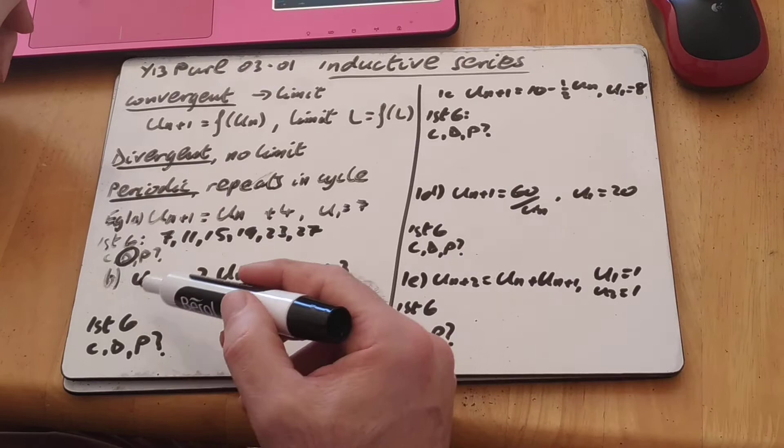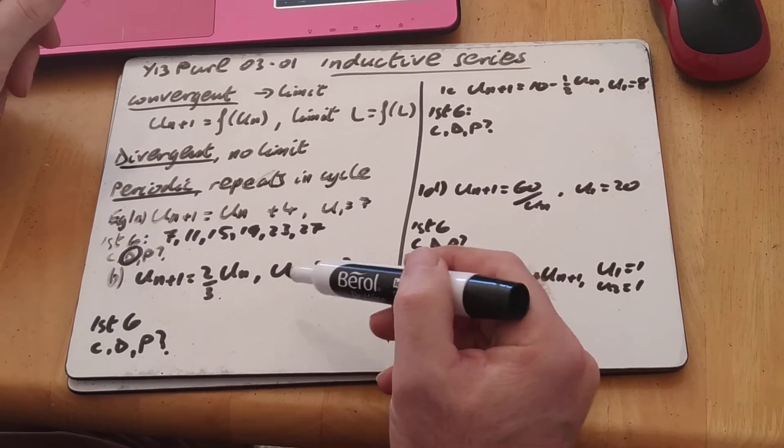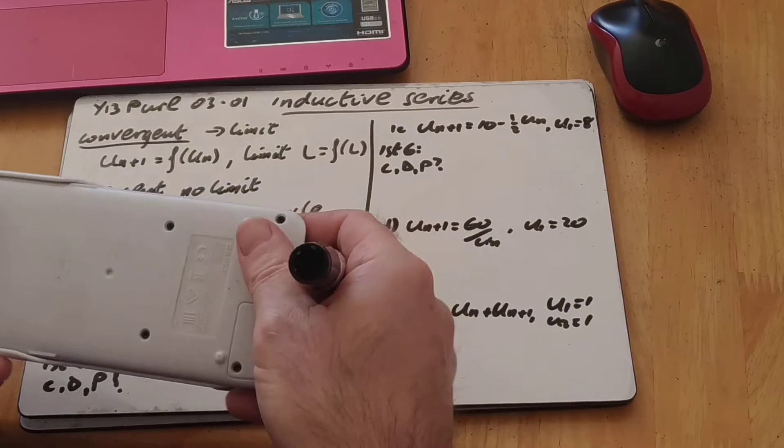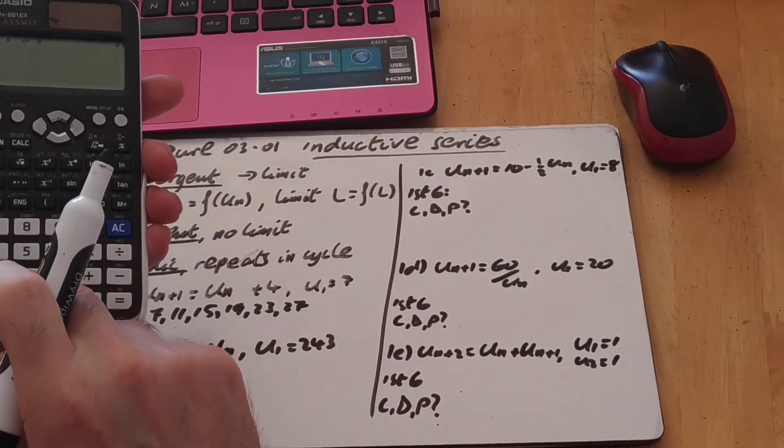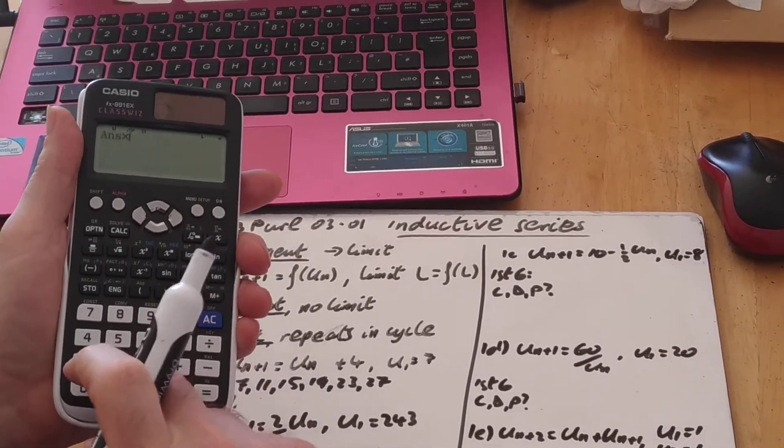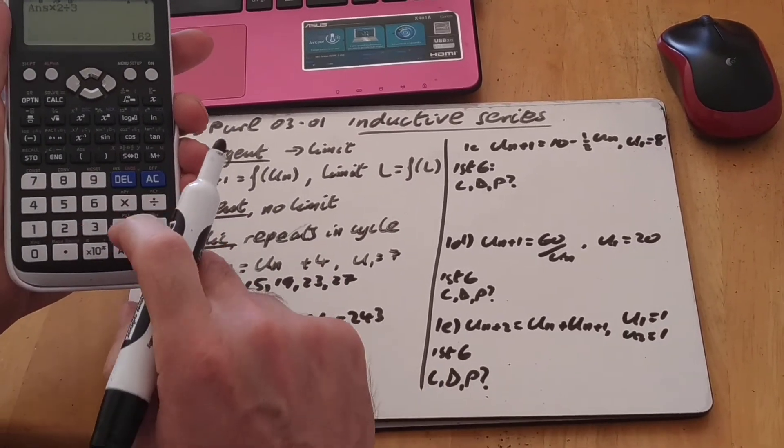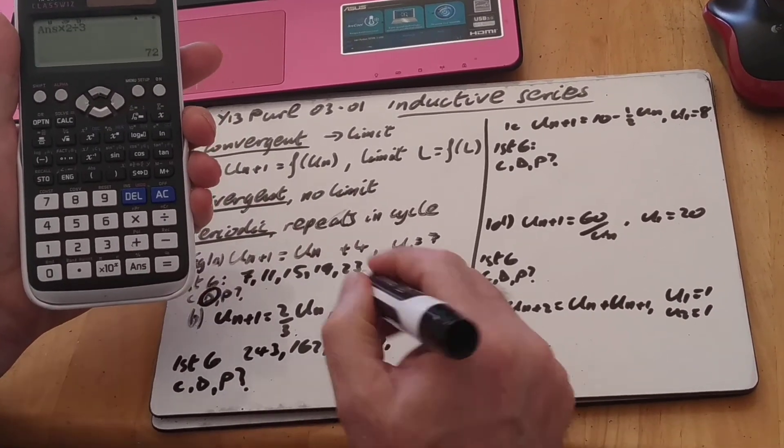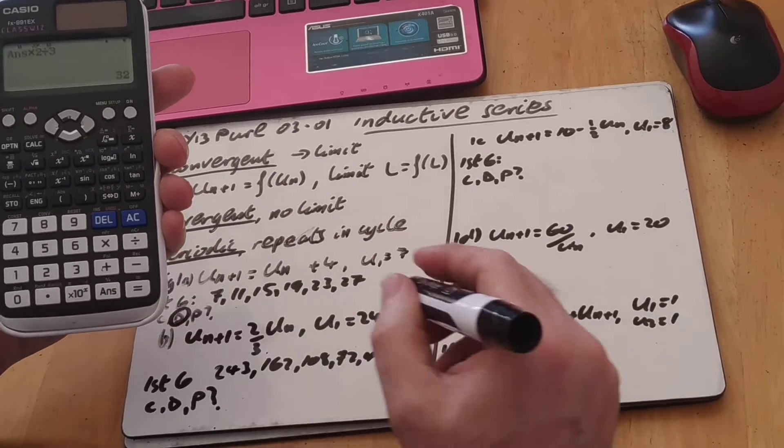And the second one, u of n plus 1 is 2 thirds of u of n, so we're just finding 2 thirds each time. So, first 6 again, start with 243 as the first one. What you can do, because I'm being lazy today, we can do iterative ones, inductive ones, by putting in our value there, and then say what we're doing, I'll give my answer, times 2 divided by 3 equals 162, press equals again, 108, third one, equals again, 72, fourth one, equals again, 48, which shows a nice one here, and then equals again, 32.